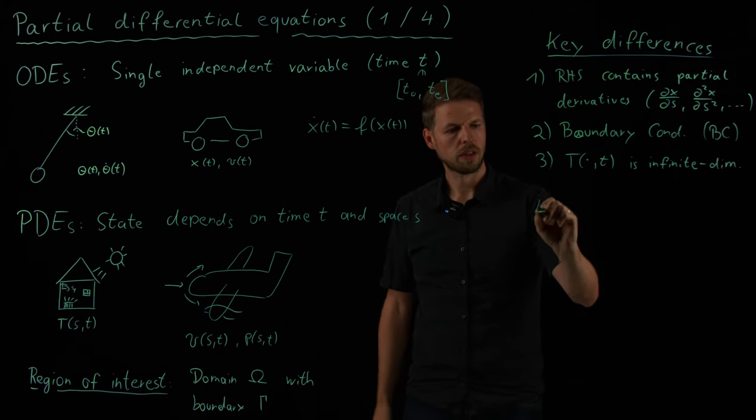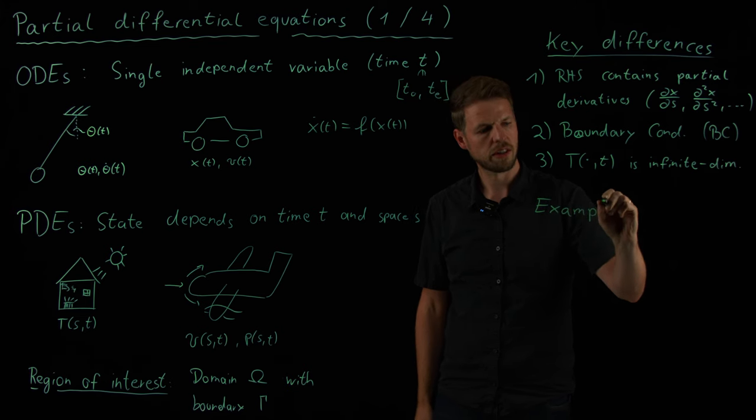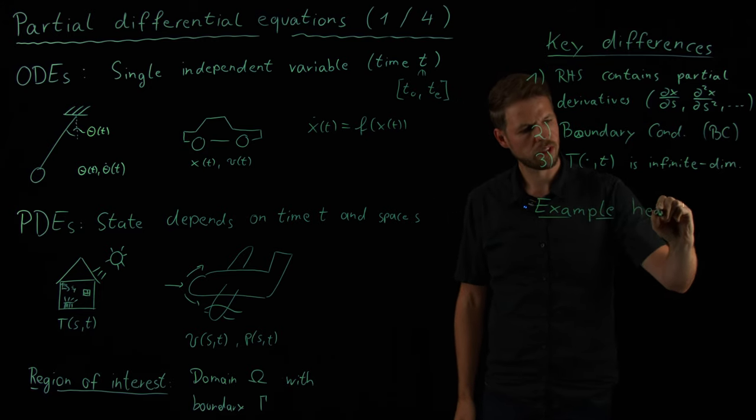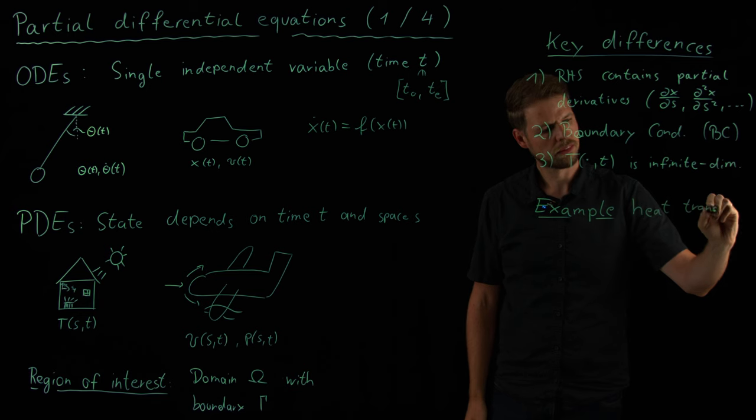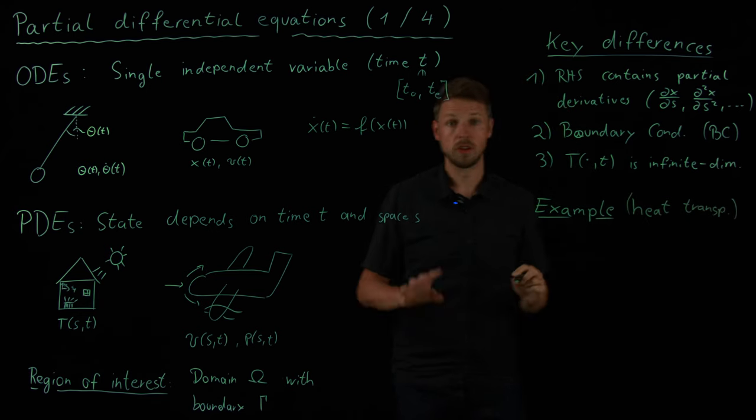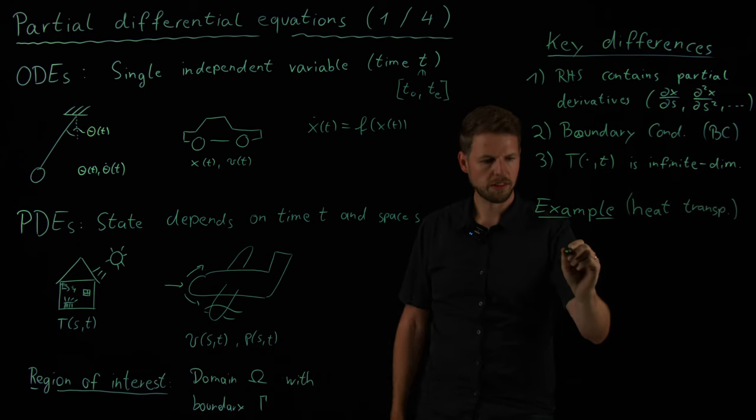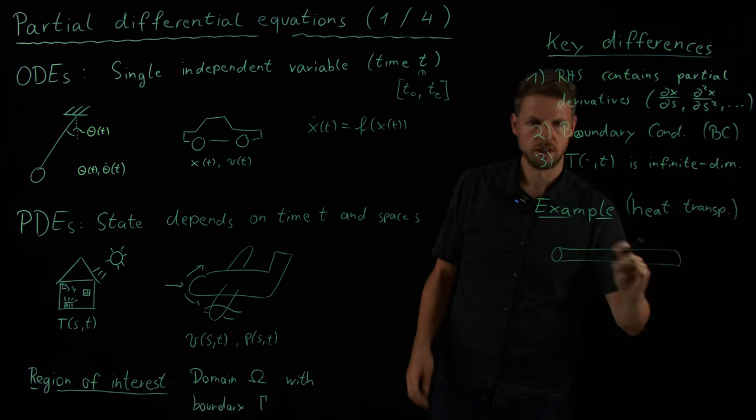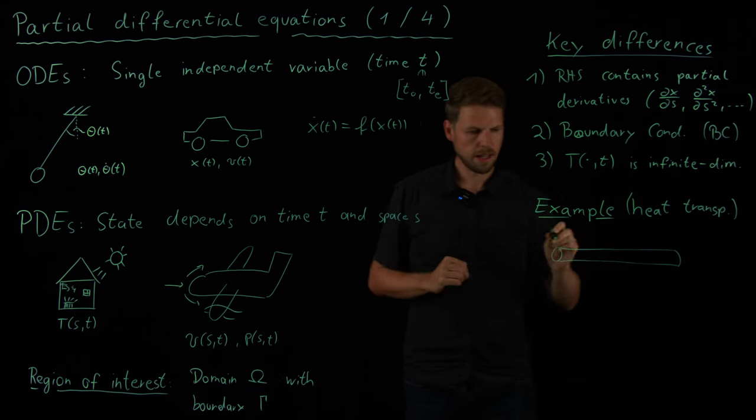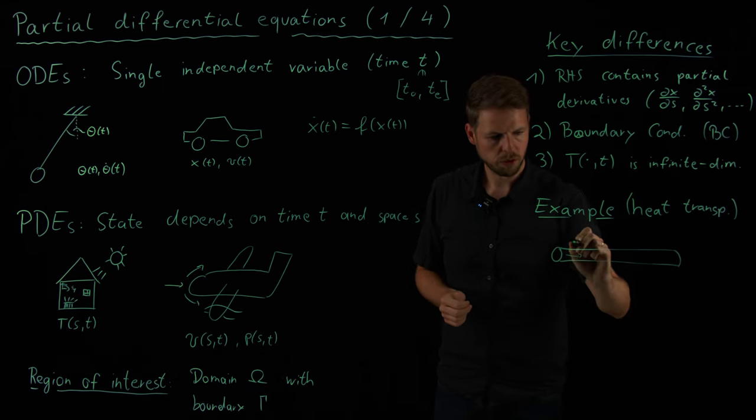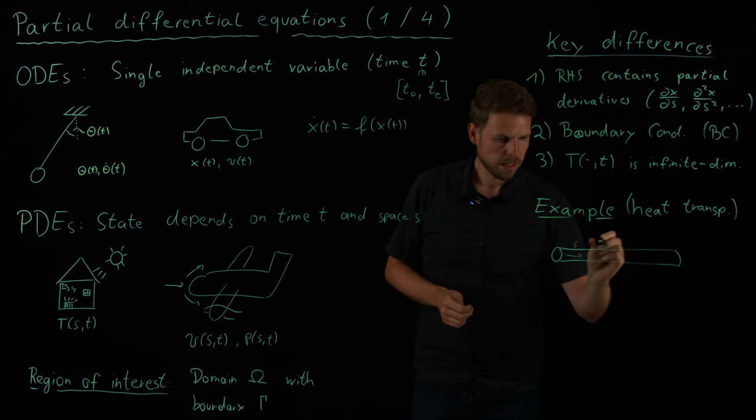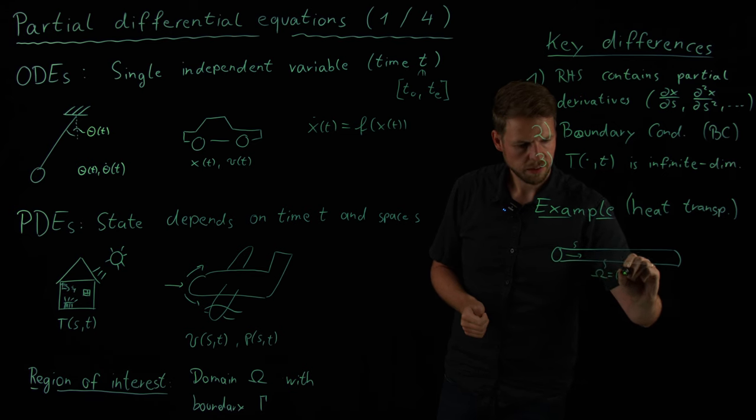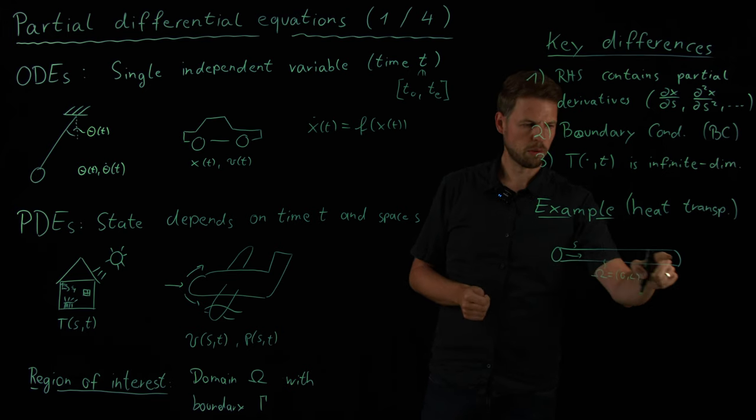And so, to conclude, let's introduce a very simple example, but I'm not going to derive anything, I'm just going to state it, which is heat transport. And this is the example we are going to consider in the next video as well. So let's consider, and this is a very simple example, we are going to consider a rod. Let's say this is a very thin and long piece of metal, maybe. And the only variable we are interested in, so position-wise, is the vertical direction.